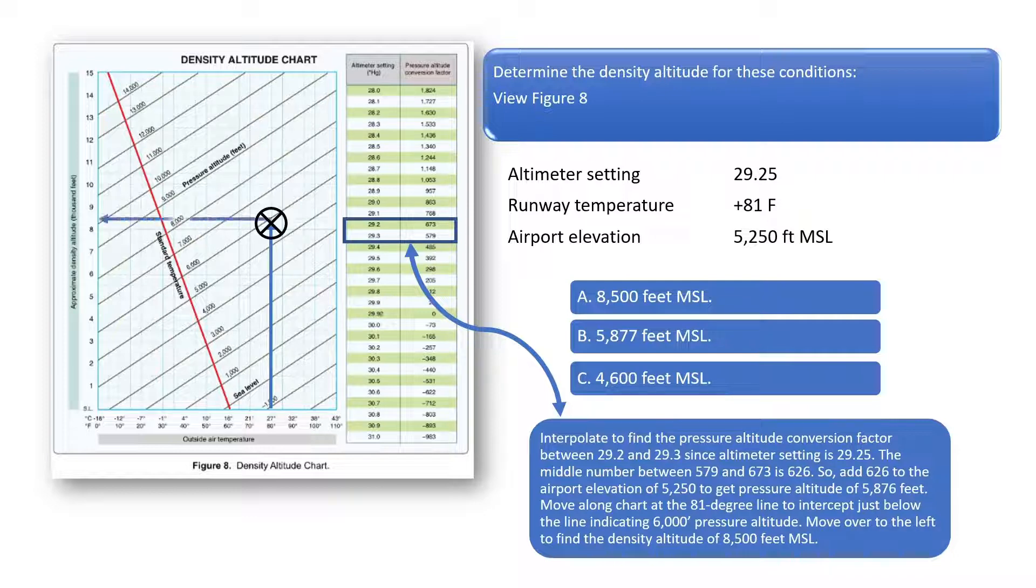Now draw a line over to the left to find the density altitude. Notice from the chart that the numbers on the left indicate thousands of feet. Since the line is intersecting the y-axis of the chart between the numbers 8 and 9, we can see the density altitude is 8,500 feet MSL.